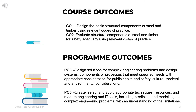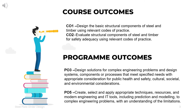Before we start, let's review the course outcome and program outcome of this course. There are two course outcomes: design the basic structural components of steel and timber using relevant codes of practice, and evaluate structural components of steel and timber for safety adequacy using relevant codes of practice. The program outcomes of this course are PO3 and PO5.